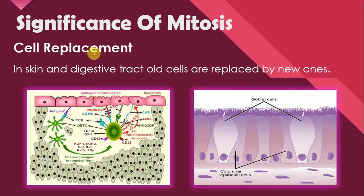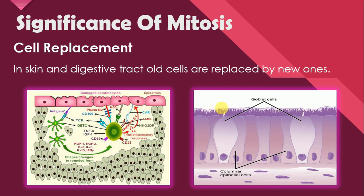Next is cell replacement. In the skin and digestive tract, old cells are replaced by new ones. In living organisms, the damaged or old cells in the digestive tract or skin epidermis are continuously sloughed off, and new cells take their place. That is because of mitosis — old cells are replaced by new cells.